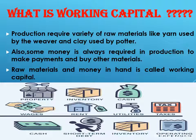Raw materials and money in hand make up working capital. Production requires a variety of raw materials such as yarn used by the weaver and clay used by the potter. Also, some money is always required during production to make payments and buy other raw items. Raw materials and money in hand are called working capital.